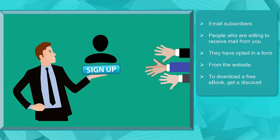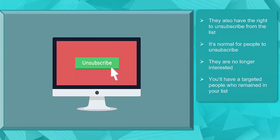Email subscribers are the people who are willing to receive mail via the email addresses that are on the email list. These people may have been part of a list possibly because they have opted in a form from the website to download a free book, get a discount, and they also have the right to unsubscribe from the list. It is normal for people to unsubscribe from your email list for the reason that they are no longer interested in the emails they are receiving from you. These people are doing you a huge favor since you'll be having a list of targeted people who remain subscribed to your list.